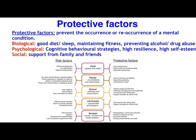Protective factors are the mechanisms that can be employed to prevent the occurrence or reoccurrence of a mental condition — they can negate predisposing, precipitating, and perpetuating factors. These include good diet and sleep, maintaining fitness to flush out excess stress hormones, and minimising stimulant and depressant use. Utilising CBT strategies by identifying negative thought processes and modifying them with more adaptive ones, high resilience in terms of adapting to new situations, and support from family, friends, and mentors are all key protective factors.